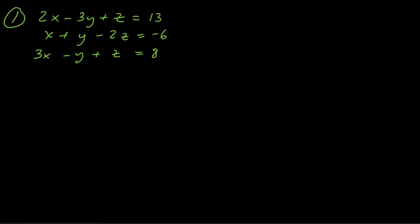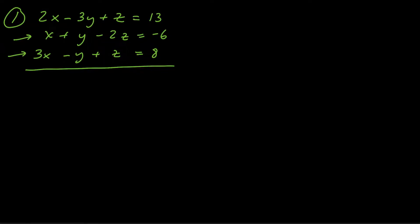What I mean by that — I'm going to show you. Let's take equation number two and number three, and let's go ahead and add those together. The reason I'm adding those together is that this positive y and this negative y, when we add straight down, are going to cancel one another out, effectively eliminating the y variable. So we're going to get 4x, negative z, and 2.